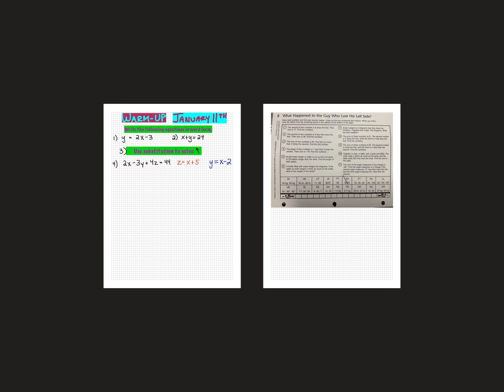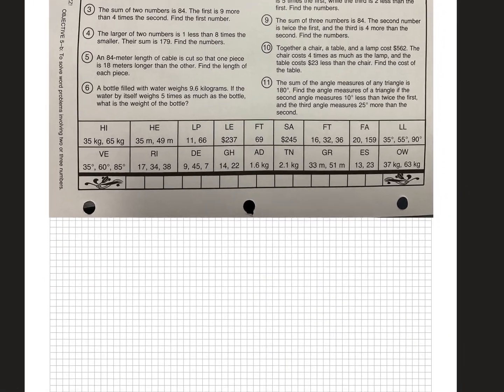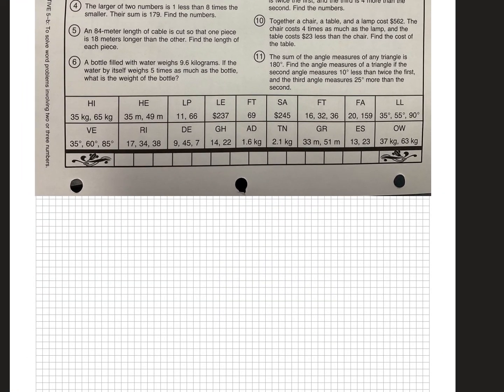I'm going to try to go fast here and do problems 6 through 11. So let's look at number 6. Sometimes when they're talking about random numbers I use X and Y, but when they're talking about something specific, I might use a letter that helps me remember. A bottle filled with water weighs 9.6 kilograms. If the water by itself weighs 5 times as much as the bottle, what is the weight of the bottle? So we're trying to figure out the bottle and the water, so I'm going to use B and W.